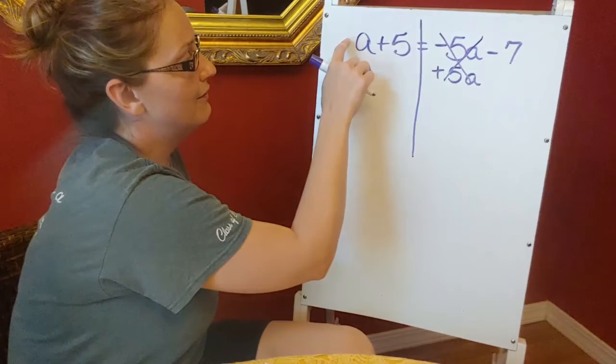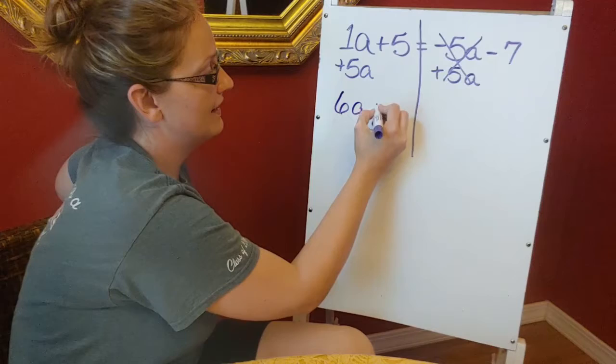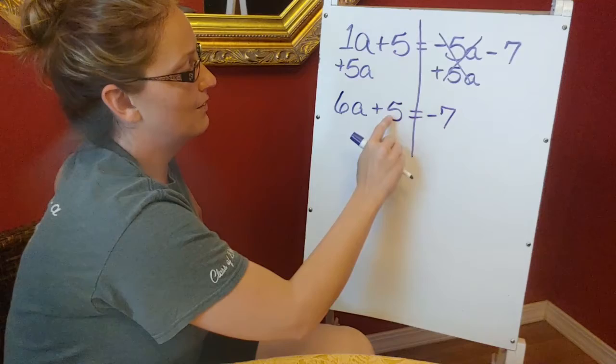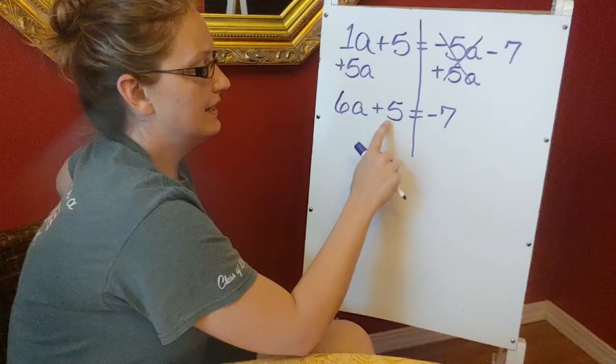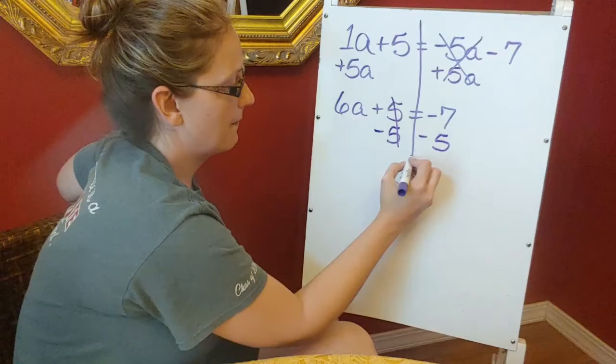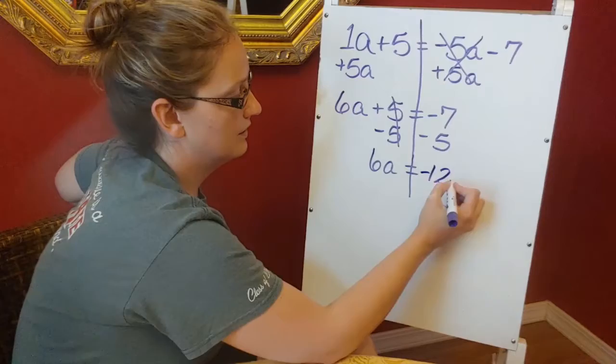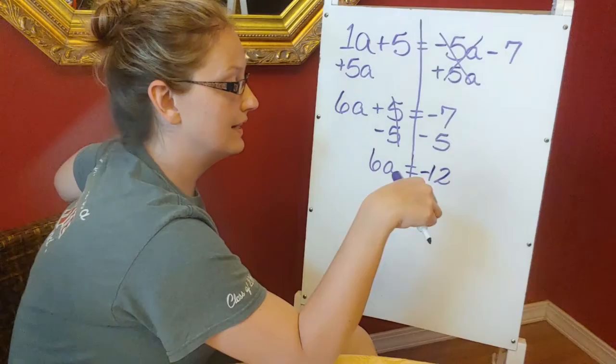That doesn't have an a on it. Over here on the right side, negative 5a plus 5a gives me 0. So that crosses out over there. And if I take an a, which this is a 1a, right? 1a plus 5a gives me a 6a. And then I just drop down my plus 5 and my negative 7 comes down here. Now I need to get this 5 over here with this negative 7. Right now it's being added, so I'm going to subtract 5 from both sides. And I drop down my 6a equals negative 7 minus 5 gives me a negative 12. If you need to, type that in your calculator. Negative 7 minus 5 gives me a negative 12.